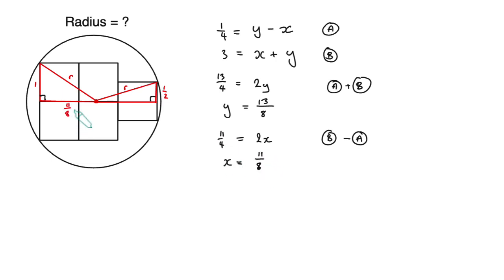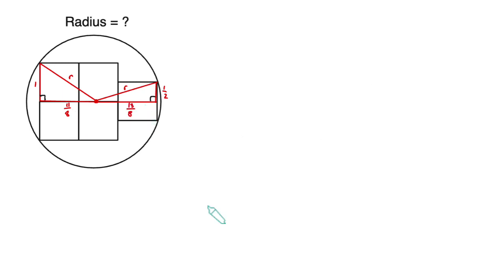At this point we realize we can go back using either x or y to apply Pythagoras and just find the radius. We'll use x here, so Pythagoras theorem would tell us that 1 squared plus x squared equals r squared. So we've got r squared equals 1 squared plus 11 over 8 squared, that is 1 plus 121 over 64, or 64 over 64 plus 121 over 64. That gives us 185 over 64, and so the radius is the square root of that, which is the square root of 185 over 8.